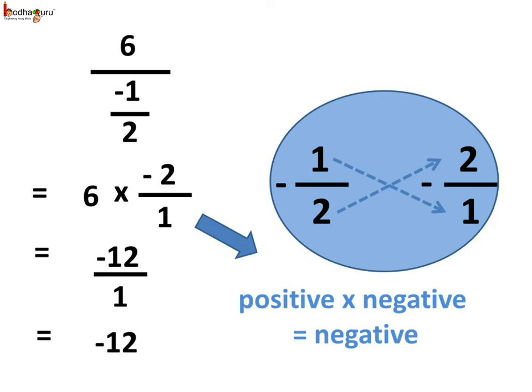Let's take an example. If we do 6 divided by minus 1 by 2, then it can be changed as 6 multiplied by minus 2 by 1, as minus 2 by 1 is the reciprocal of minus 1 by 2. And thus we get the answer as minus 12 by 1, which is actually minus 12.